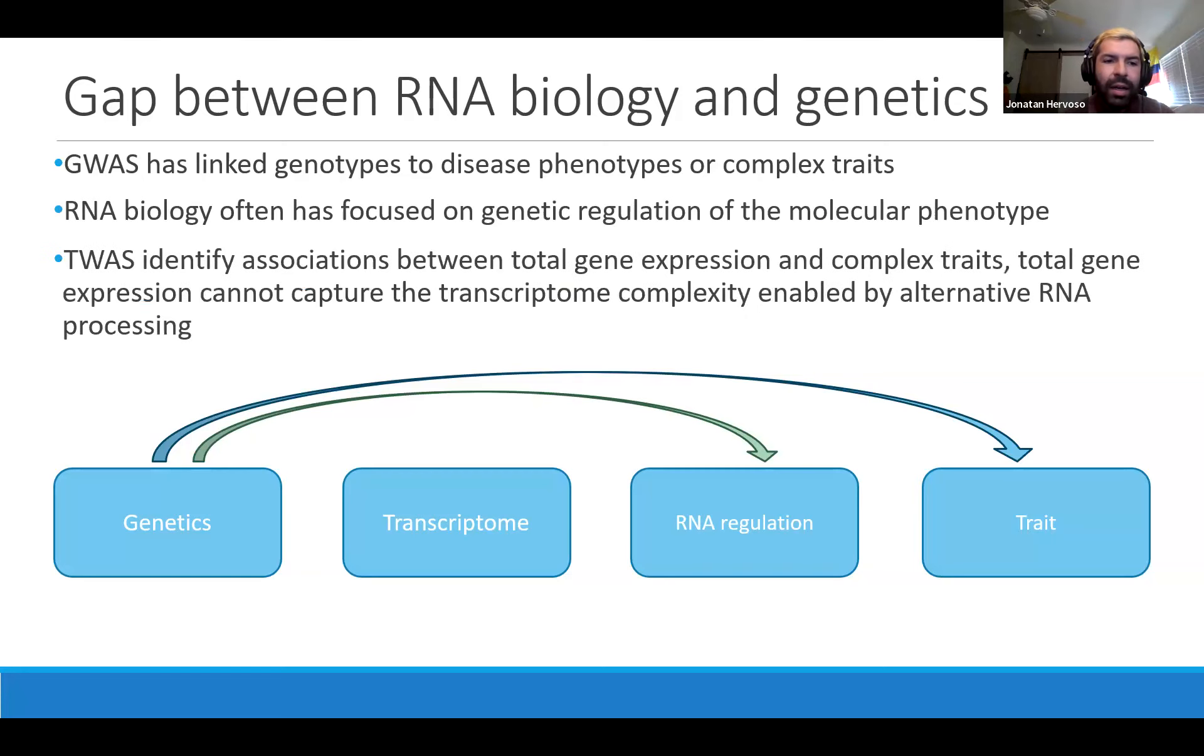More recently, TWAS or transcriptome-wide association studies have identified associations between genetics, the transcriptome, gene expression, and a trait. But the problem with this is we're skipping the nitty-gritty of RNA regulation. What I propose is to create a framework that bridges this gap and goes from genetics to transcriptome to RNA regulation and then links all of that to a trait.